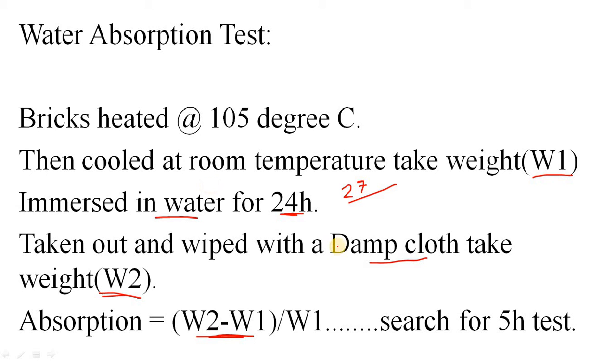To get the percentage, we will divide this amount of water by the dry weight of brick, or W1, which we have taken earlier. This will give you the amount of water absorption of the brick. Now your duty is to search for the 5-hour test or the rapid test.